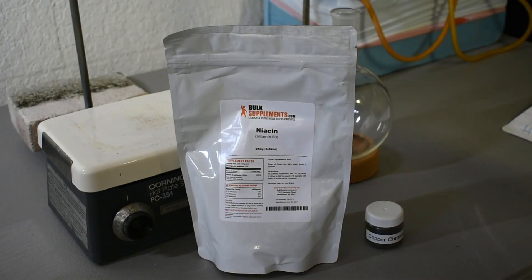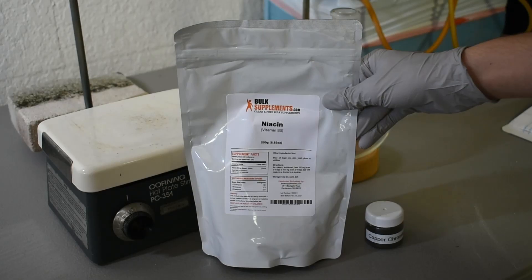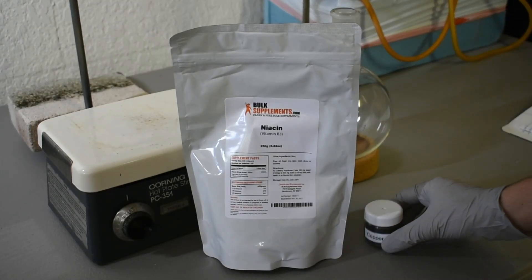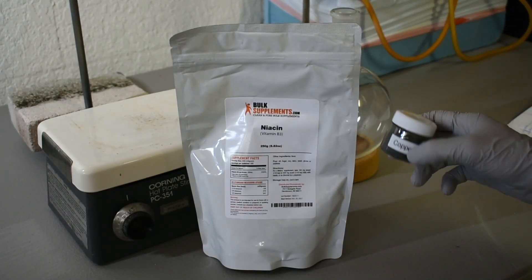Hey guys, today we're going to make some pyridine by decarboxylating niacin using the copper chromate I made in my last video.